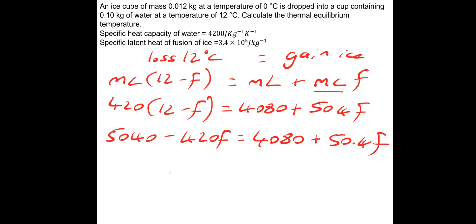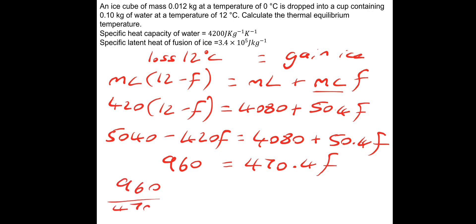Getting the numbers on the left and f's on the right: 5040 minus 4080 gives 960 on the left. On the right we have 50.4f plus 420f giving 470.4f. So 960 equals 470.4f. To finish, 960 divided by 470.4 gives a final equilibrium temperature of 2 degrees Celsius.